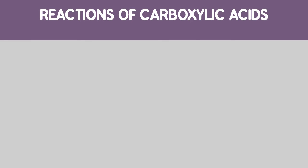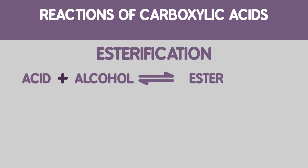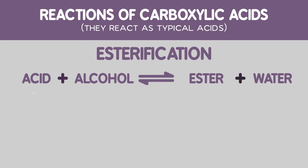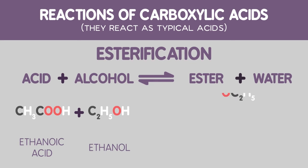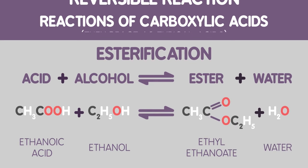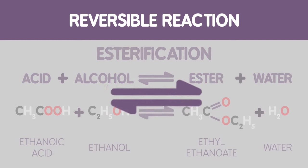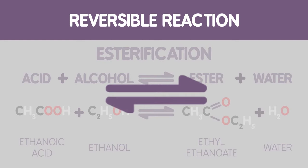Carboxylic acids also give another important reaction called esterification. Here they react with alcohols to give an ester plus water. An example is ethanoic acid and ethanol giving ethyl ethanoate and water. This is a reversible reaction, which can be seen from the directions of the two arrows shown.